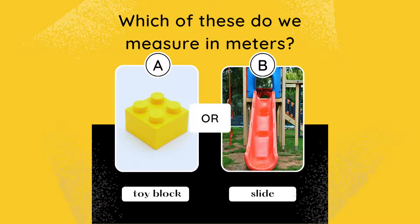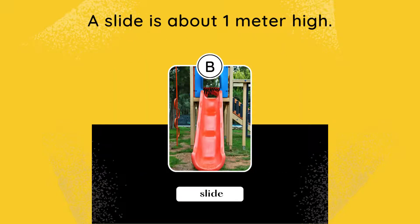Which of these do we measure in meters: A, a toy block, or B, a slide? The answer is B. A slide is about 1 meter high.